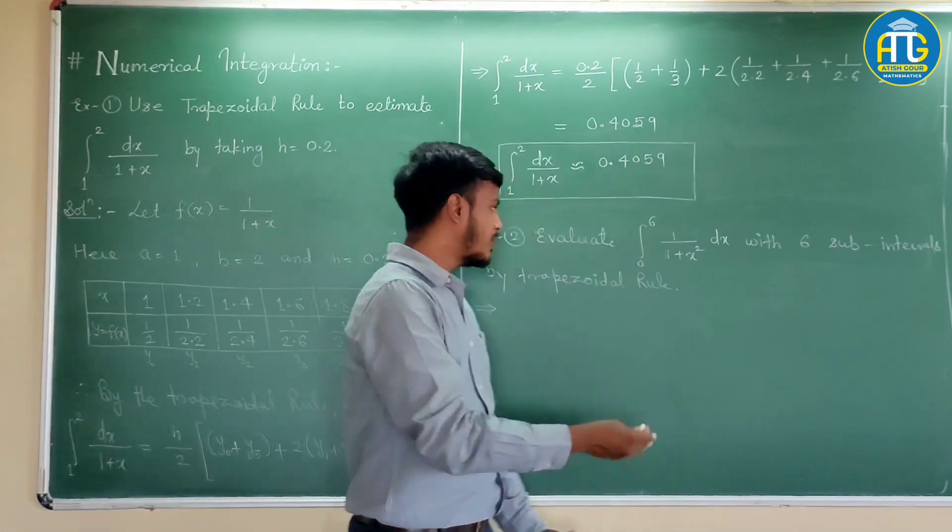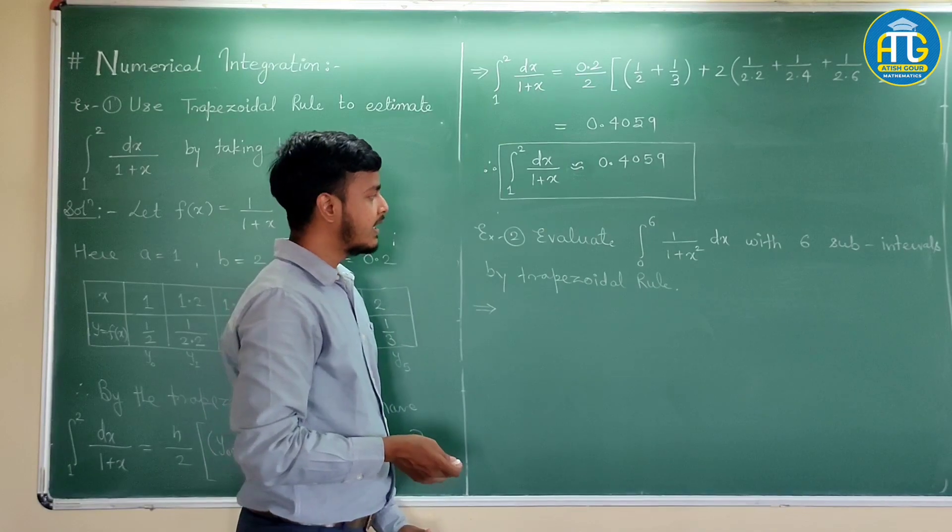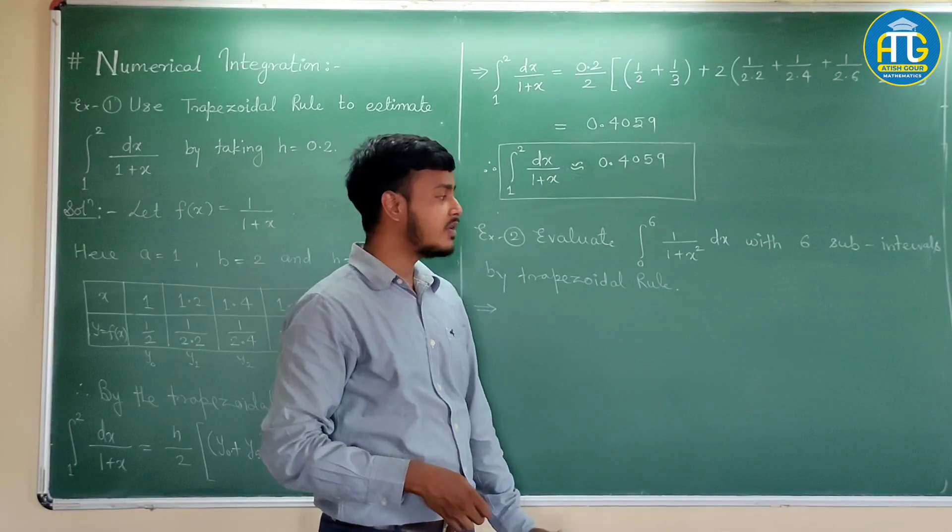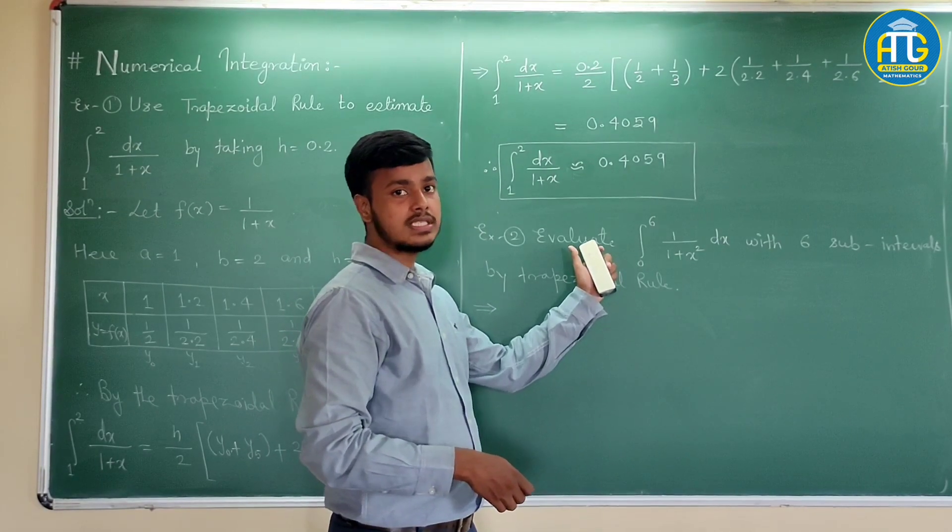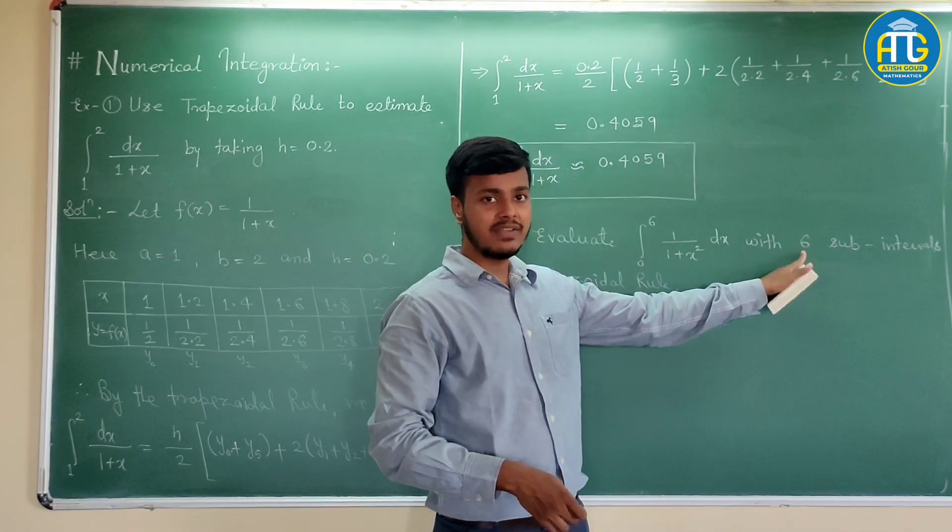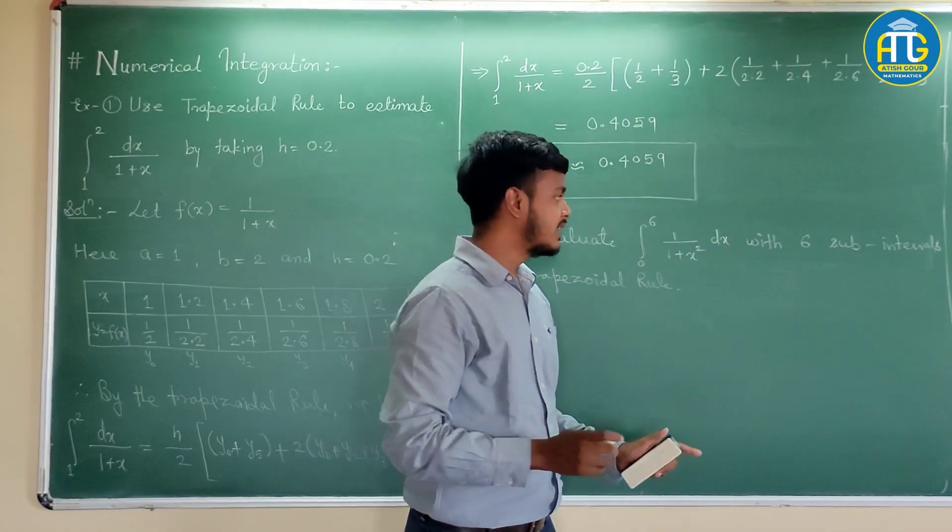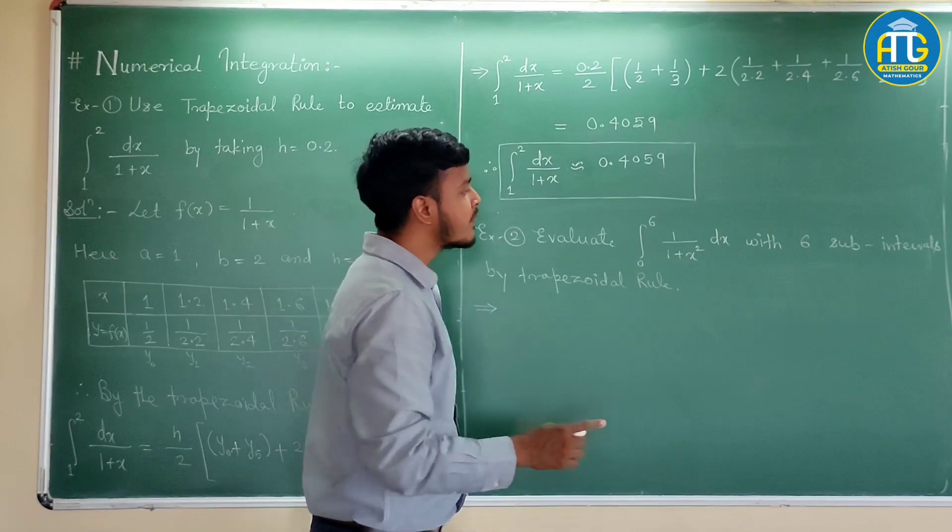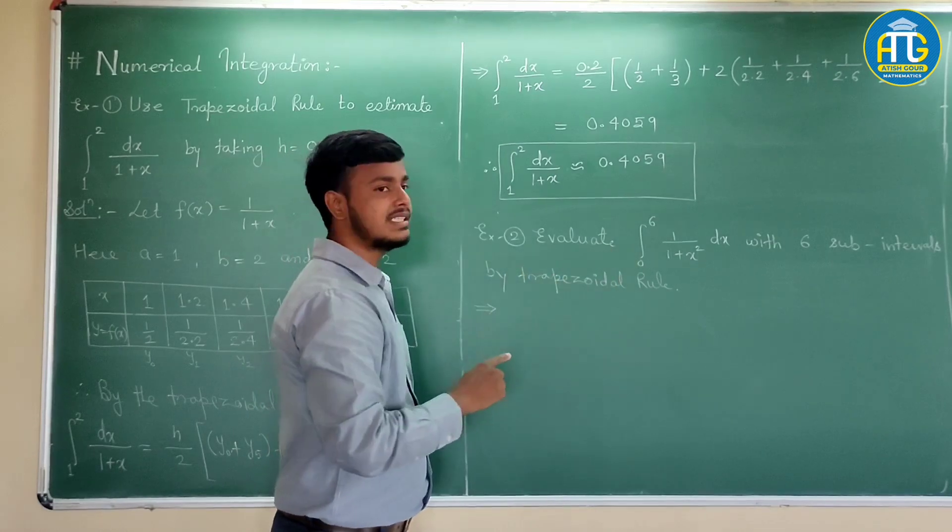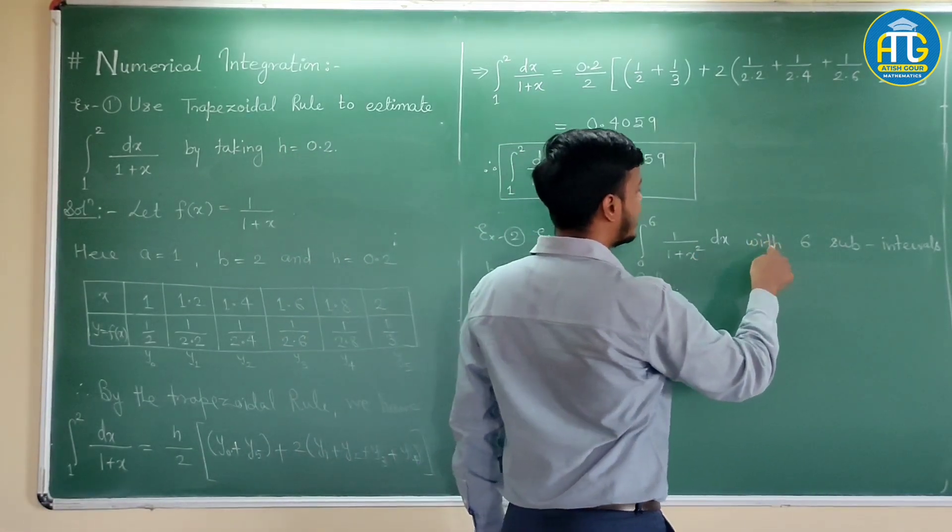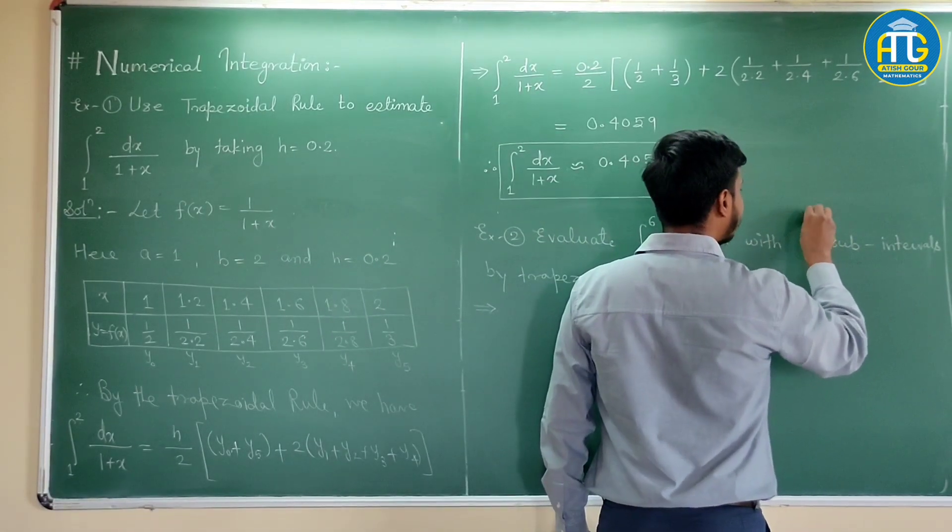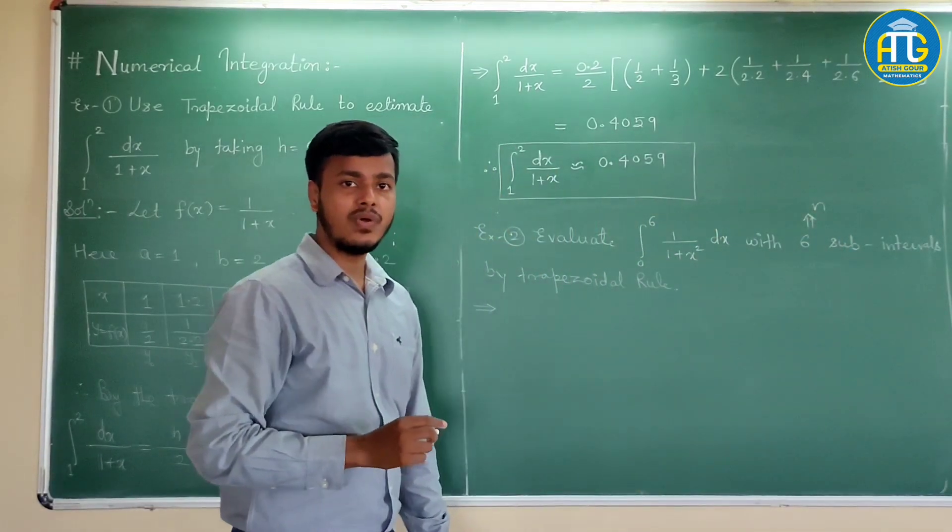Sometimes what happens? A problem like this would be given to you. And you may be wondering like this type of problem we haven't done. Because to solve this numerical integration, I need h and the data. Once I get the h, I will definitely get the tabular data. That is easy to get that data. But as you can see here, the value of h is not given. So, whenever you have a problem like this, like evaluate integration of something with 6 subintervals by trapezoidal rule, then this number you treat it as n. N is number of interval.